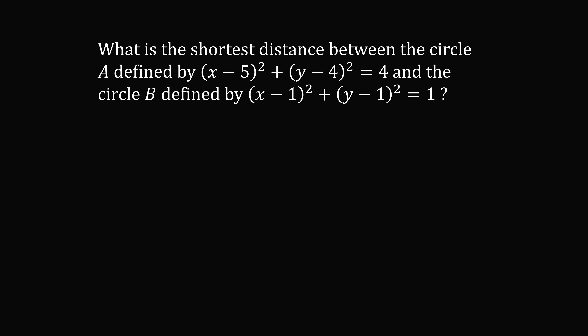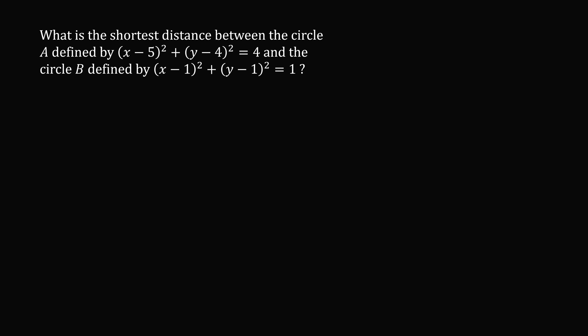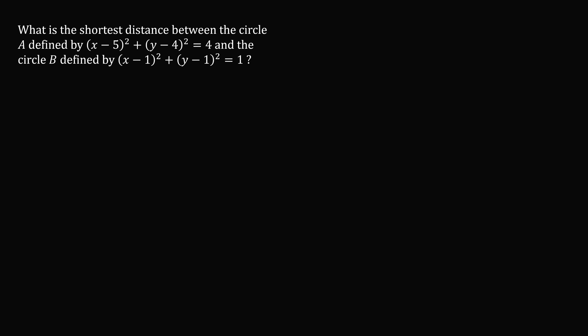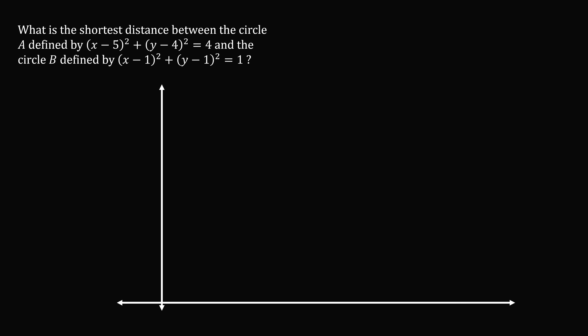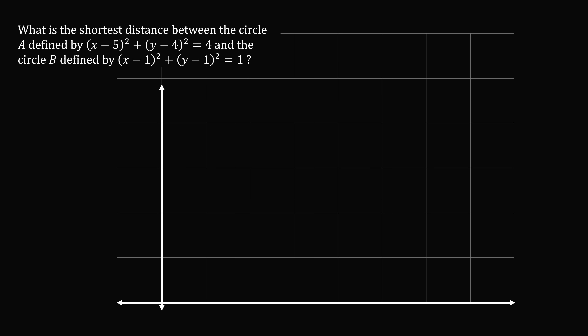To solve this question, we will get started by sketching the graphs of circle A and circle B. Recall that if a circle has an equation of the form (x minus h) squared plus (y minus k) squared equals r squared, the circle will have a center at (h, k) and a radius equal to r.